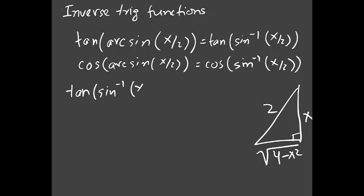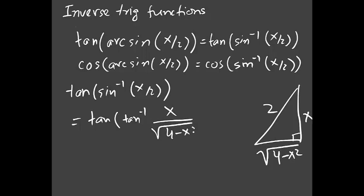For tangent of sine inverse(x/2), convert sine inverse to tan inverse. Tan is opposite over adjacent, so tan inverse gives x over √(4 - x²). Tan and tan inverse cancel, and you get x over √(4 - x²).